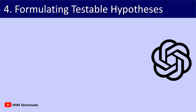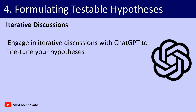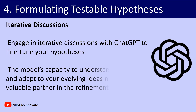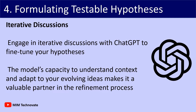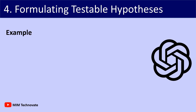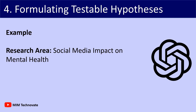Number 4: Formulating Testable Hypotheses — Interactive Discussions. Engage in interactive discussions with ChatGPT to fine-tune your hypotheses. The model's capacity to understand context and adapt to your evolving ideas makes it a valuable partner in the refinement process. For example, the research area is social media impact on mental health.